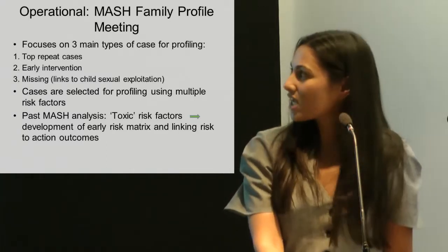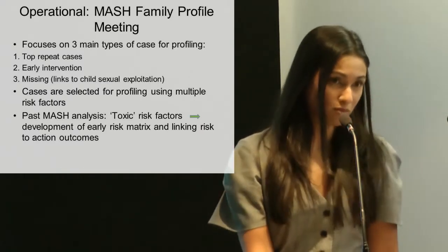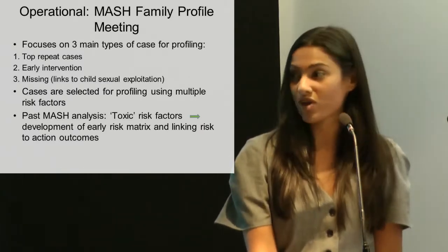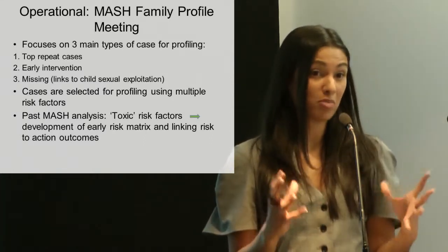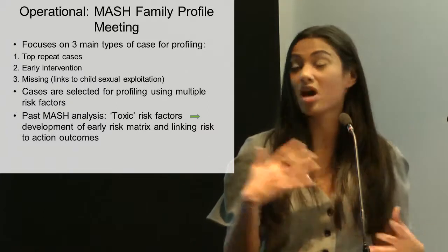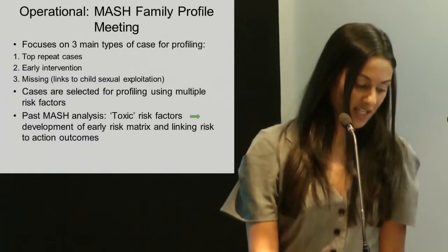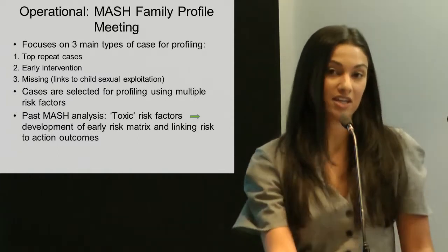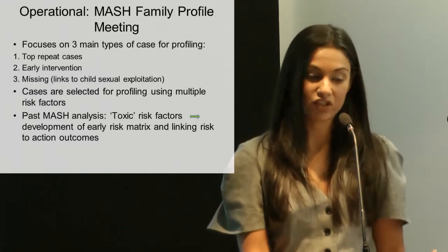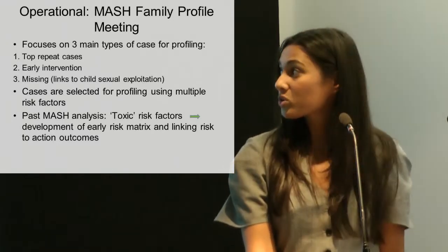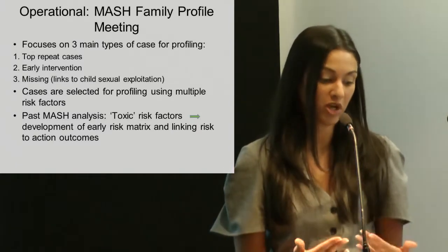The second type of case is the early intervention cases. They might have only come through the MASH once or twice and then be no further action, but actually the risk factors within that family as a whole suggest that they're going to become one of our top repeat cases in the future. The third type of case is the missing children cases. They can either be top repeat missing children, or those where they've only gone missing once or twice but the risk factors suggest that they're going to carry on going missing.